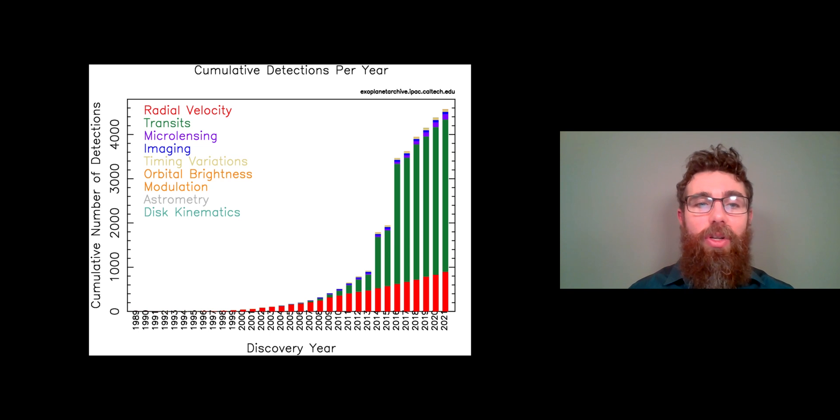You can see the different colors there. The different color on the plot represents the method in which they were discovered.